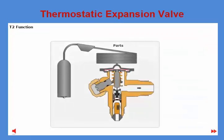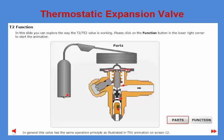The T2-TE2 thermostatic expansion valve is designed with an exchangeable orifice in the inlet connector. The outlet connector is available in either SAE flare or inch or millimeter solder. The valve body is brass, and the diaphragm housing, capillary tube, and bulb are made from stainless steel. This valve has been in the market for more than 40 years and is widely used.